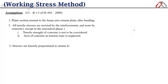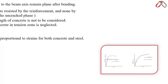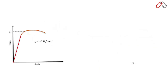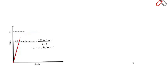The third assumption is that stresses are linearly proportional to strain for both concrete and steel. For example, consider Fe 500 steel: the yield strength is 500 N/mm². To find the allowable stress for steel we divide by the factor of safety 1.78, giving allowable stress σ_st = 280 N/mm².